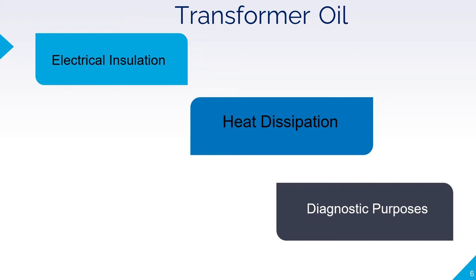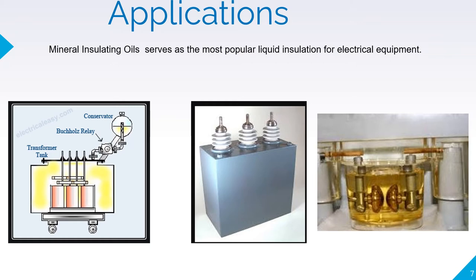Transformer oil is used in the transformer for three basic purposes: electrical insulation, heat dissipation where it acts as a coolant, and diagnostic purposes so that we can test the transformer and assess its health. Mineral oil serves as the most popular liquid insulation for electrical equipment, used in oil-filled capacitors, transformers for cooling and insulation.